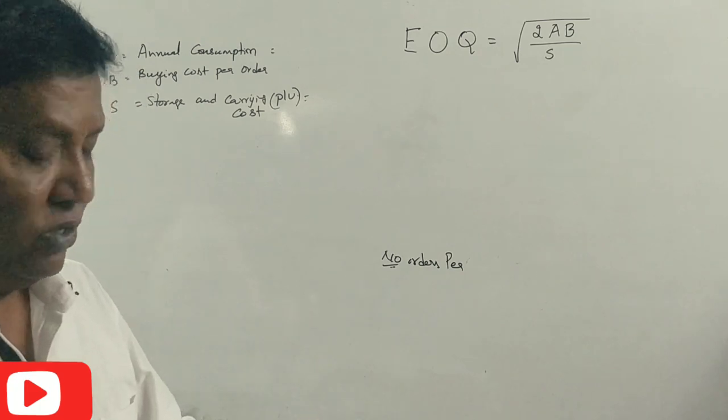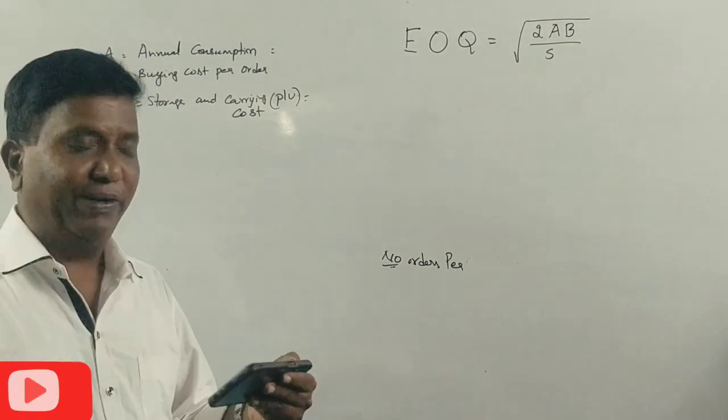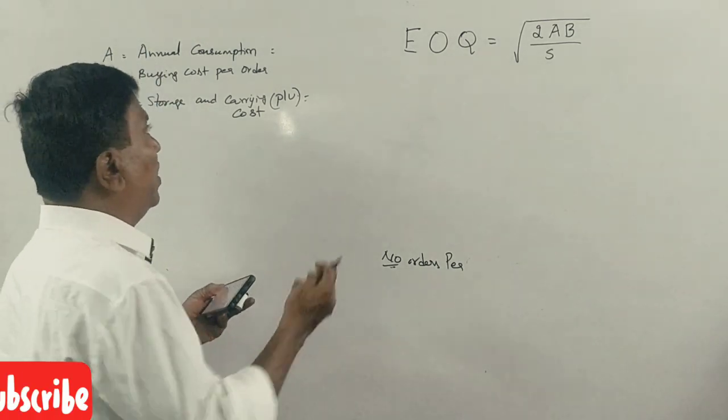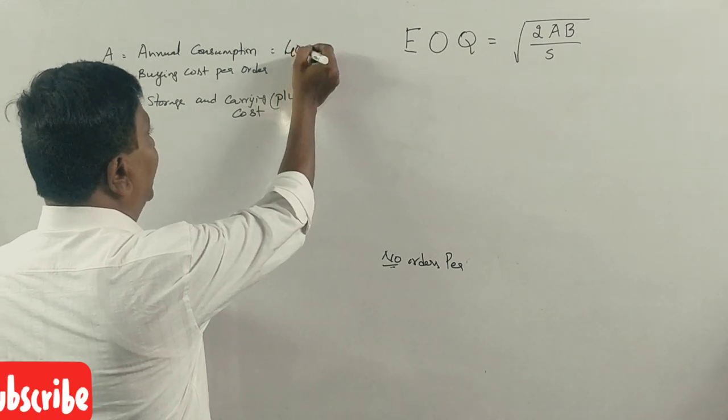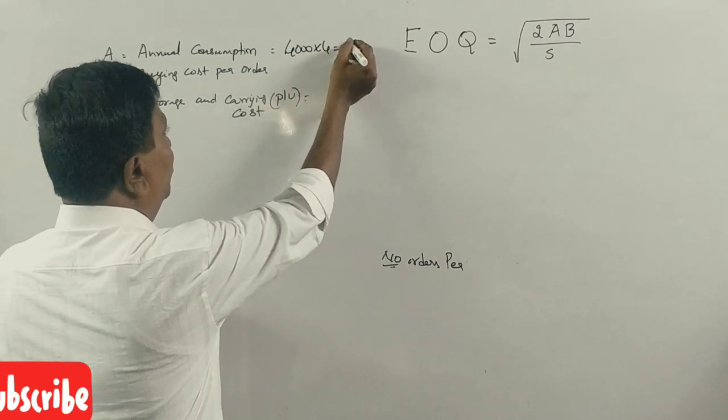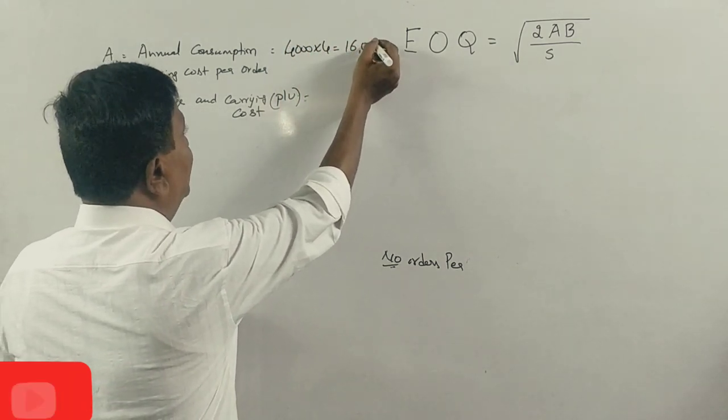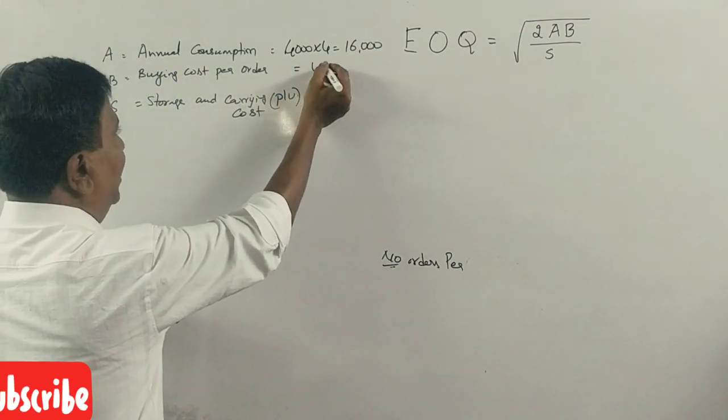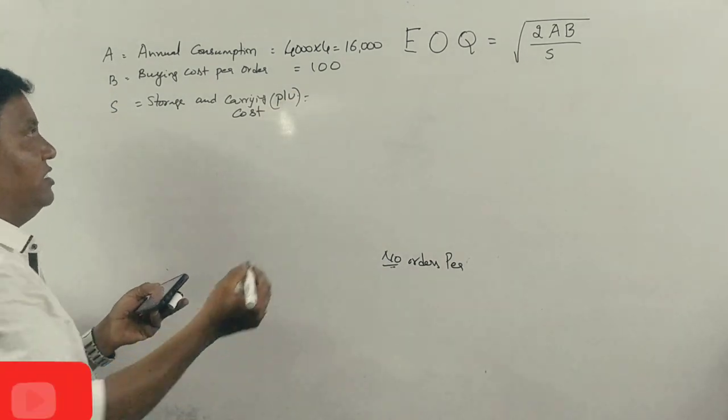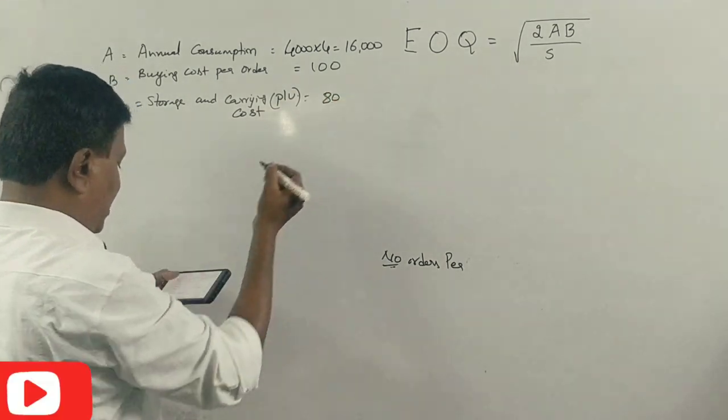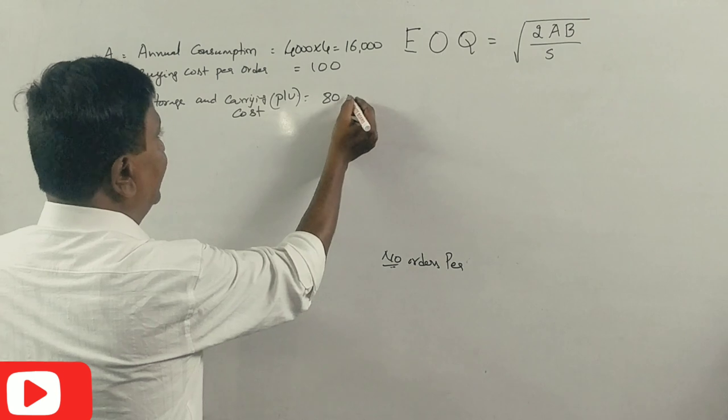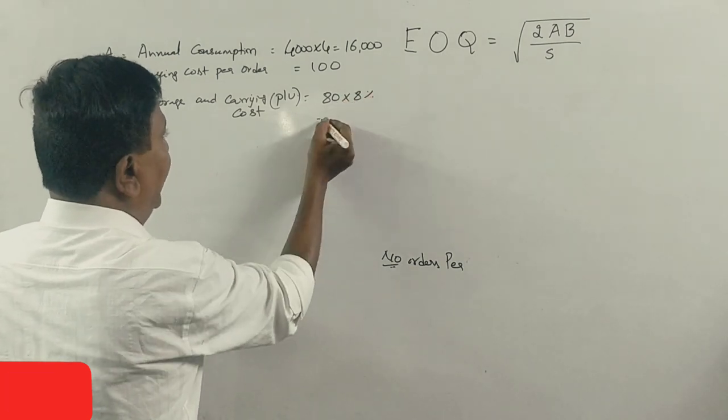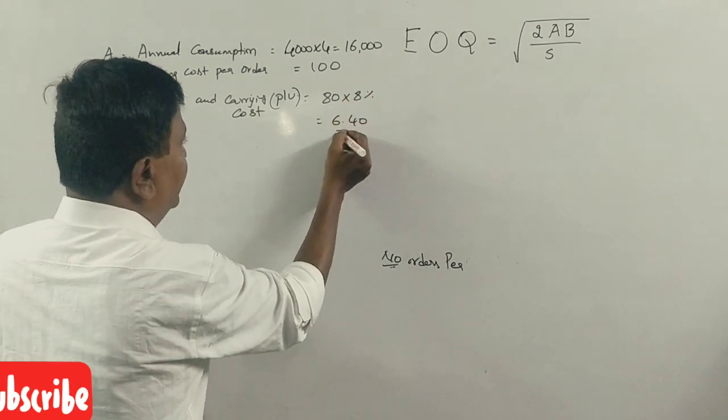Quantity: quarterly consumption of materials. One quarter has 4,000 units, so one year will have 16,000 units. Cost of placing an order is 100 rupees, cost per unit is 80, and 8% is the carrying cost. 8% of that is Rs. 40.